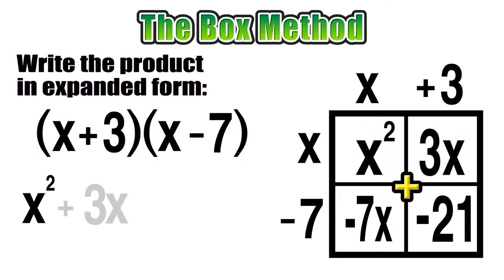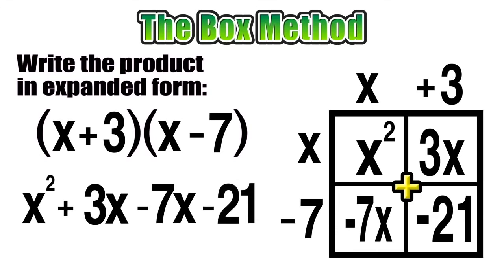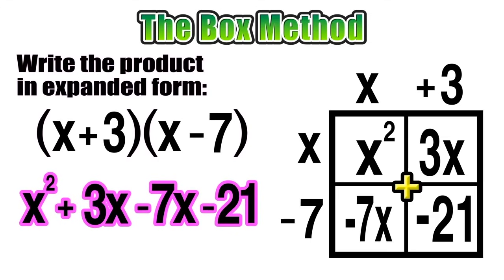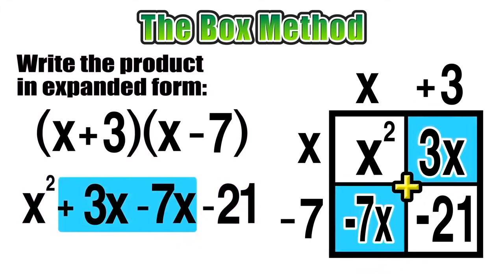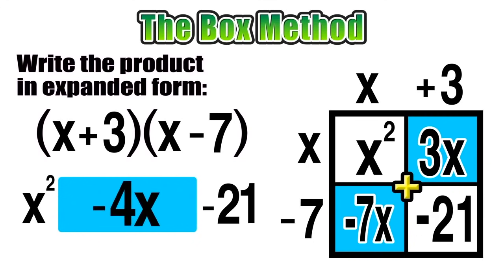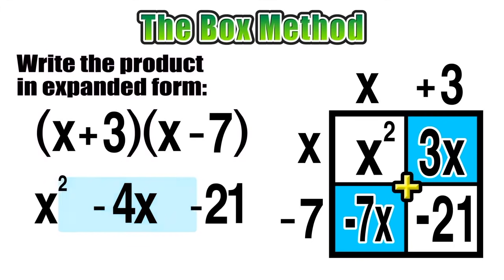Plus 3x, plus negative 7x or just minus 7x, and plus negative 21 or just minus 21. Now our expression is in expanded form, but we should notice that we do have a pair of like terms. Notice that 3x and negative 7x are like terms and we can combine them as negative 4x.